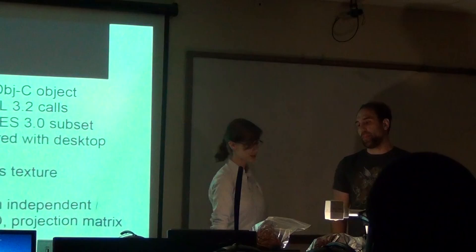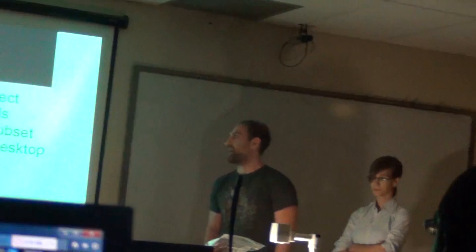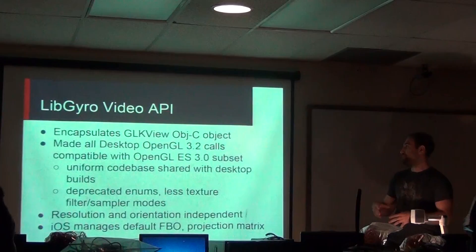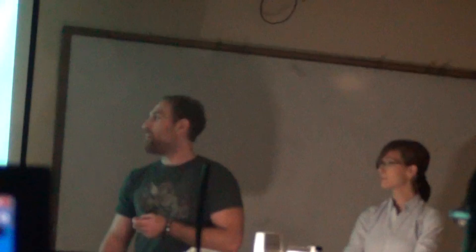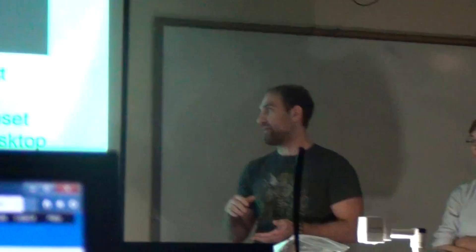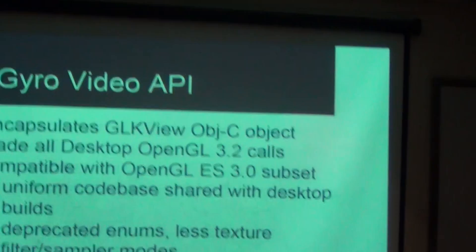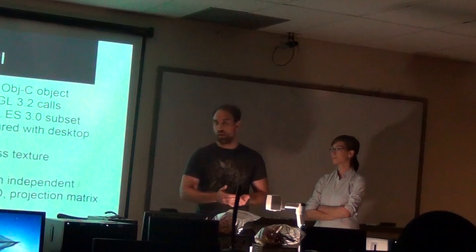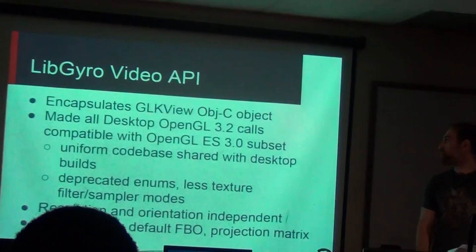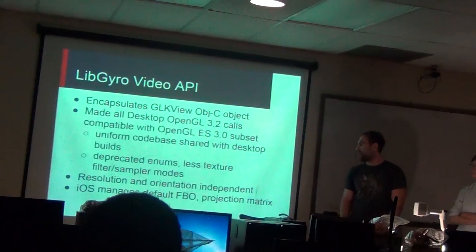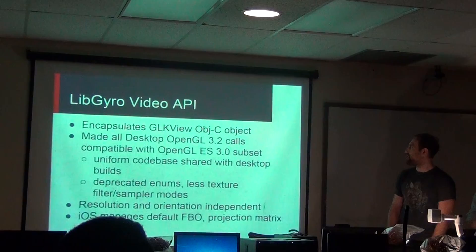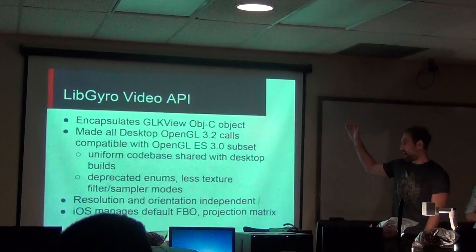The video API was kind of a big undertaking. Essentially, it encapsulates a GLK view, an Objective-C object. That's just an OpenGL-oriented view, traditional view, but tailored for OpenGL. Basically, the desktop versions for Mac, Linux, and Windows are all using OpenGL 3.2. I wanted to keep the code base uniform, so I tried to modify all the 3.2 calls to drop down to OpenGL 3.0, which was supported by the iPhone 5S and above right now. So everything that I was able to modify to match the 3.0 subset, I did. There were a few things that weren't implemented that I had to do manually. There were a few things that had to become preprocessor directives checking for OpenGL ES versus the desktop version.